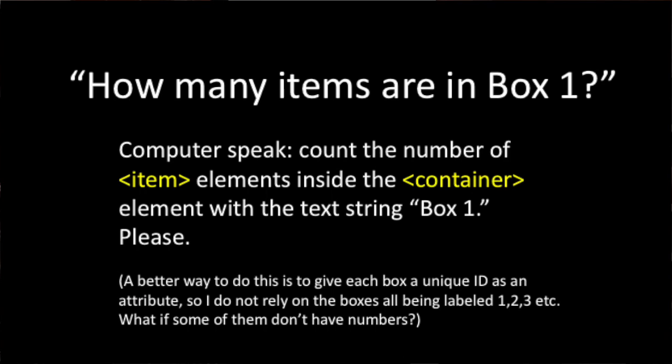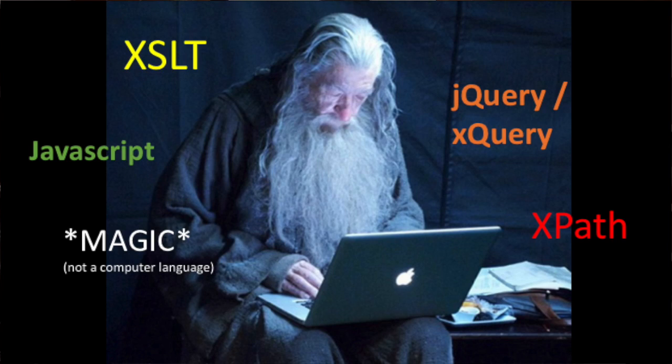So now I could write a computer program to help me do things like ask: how many items are in box 1? Do I have any boxes without books in them? Or get me a list of items in each box, sort them alphabetically, and then number them. Because I gave these elements a structured relationship, I can manipulate them with other kinds of computer code. If I just had lists of words and nothing else, I would have to do this all by hand.